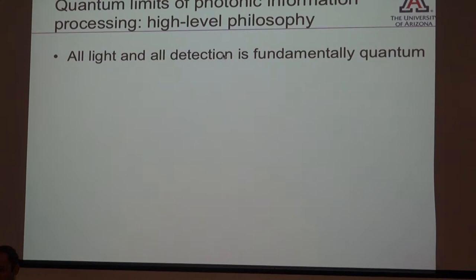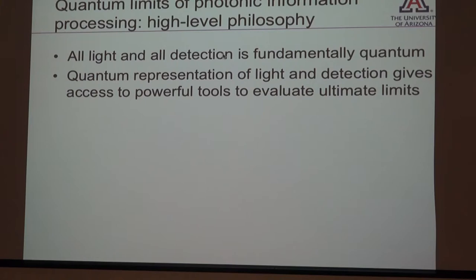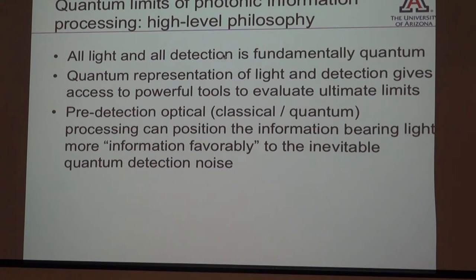The high-level philosophy that has underlain most of my research goes back to the fact that light is fundamentally a quantum mechanical object. So wherever light is used — in communications, sensing, imaging, or computing — treating it as a quantum mechanical object and borrowing powerful tools from quantum information and estimation theory lets you quickly figure out the fundamental performance limits associated with those applications. Calculating those fundamental limits is the first step, but then the next step is how do you get there — how do you build, for example, a receiver for optical communications.